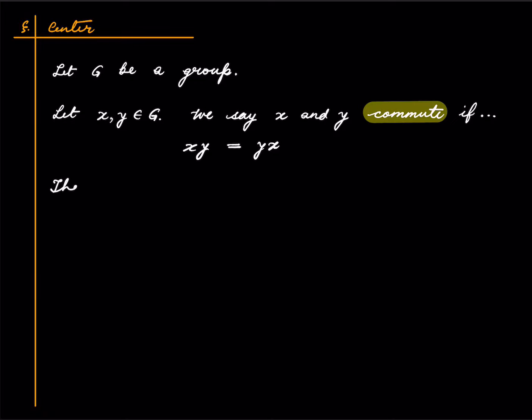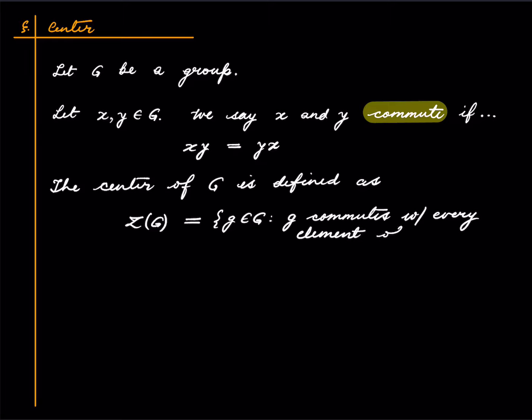The center of G is defined as, the notation is Z of G, as those elements such that g commutes with every element of the group.